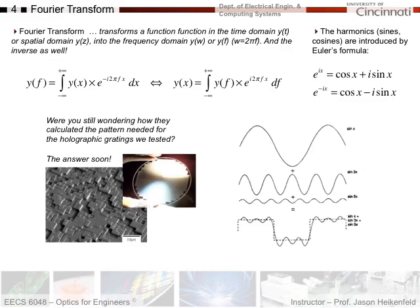This is important because you're probably still wondering how holographic films created images like the keyboard, eyeball, and text as diffracted light. They used the Fourier transform to calculate these things — they didn't place dots one by one and hope it worked. Rather, they used mathematics to predict it.